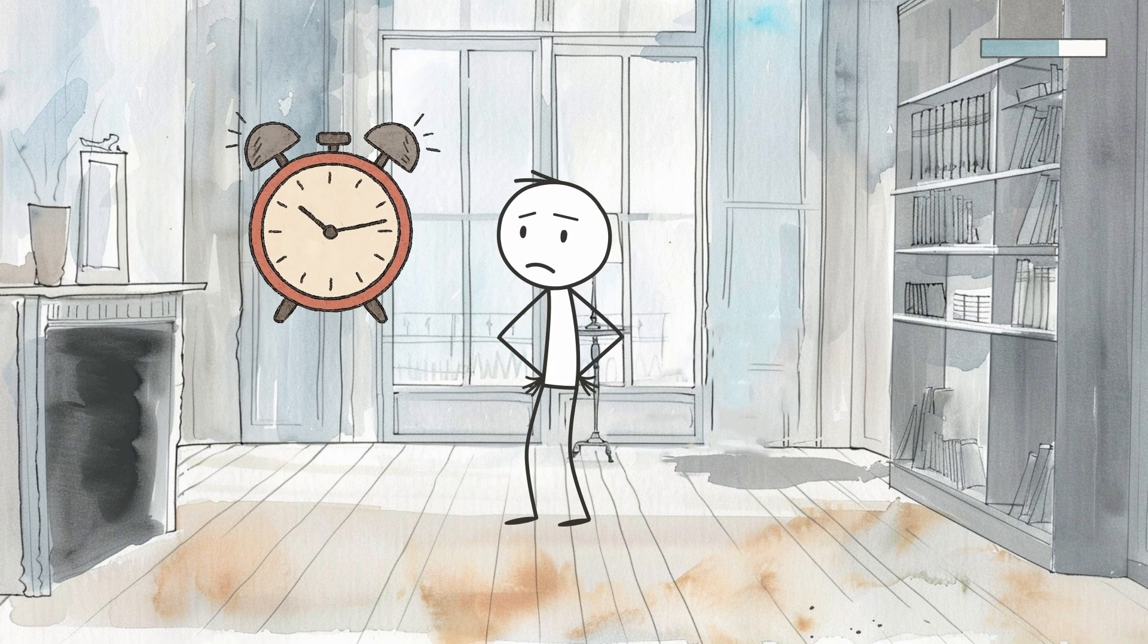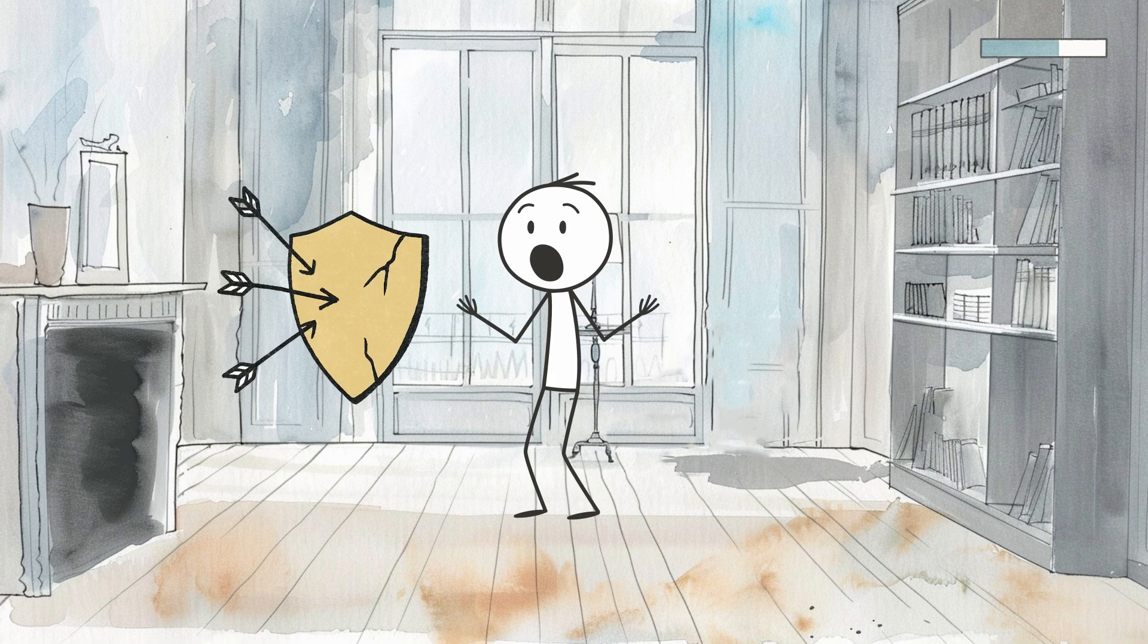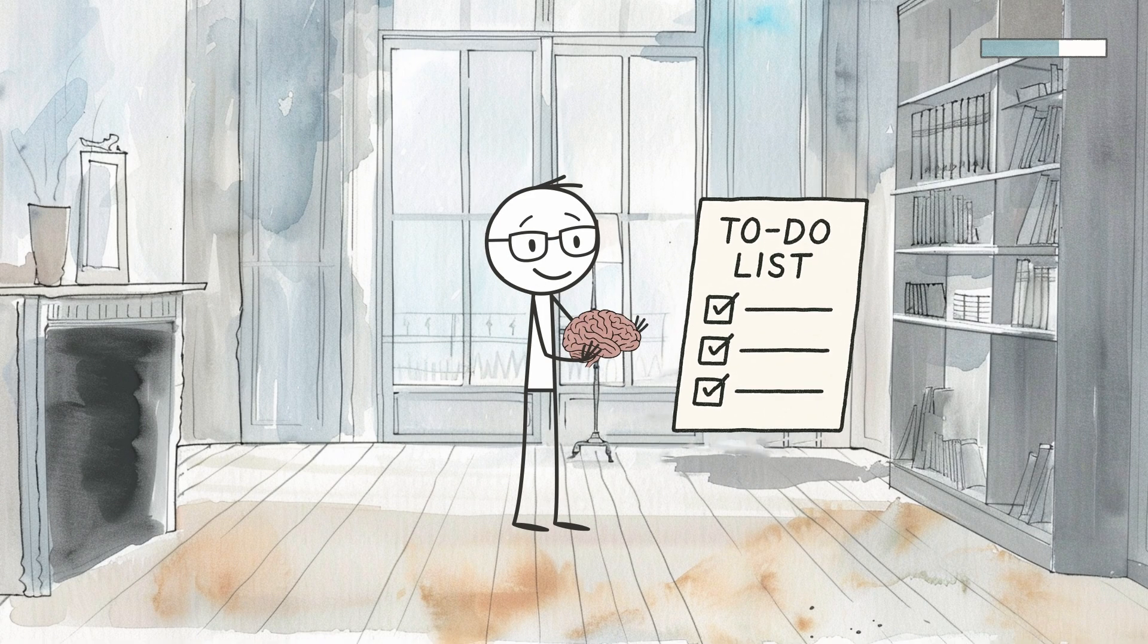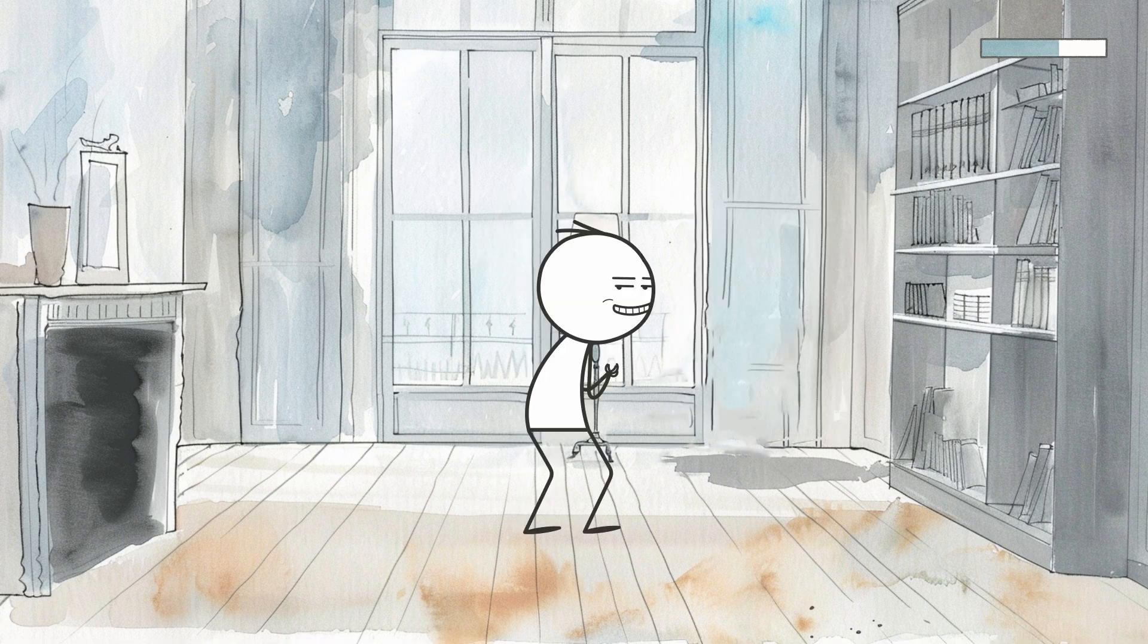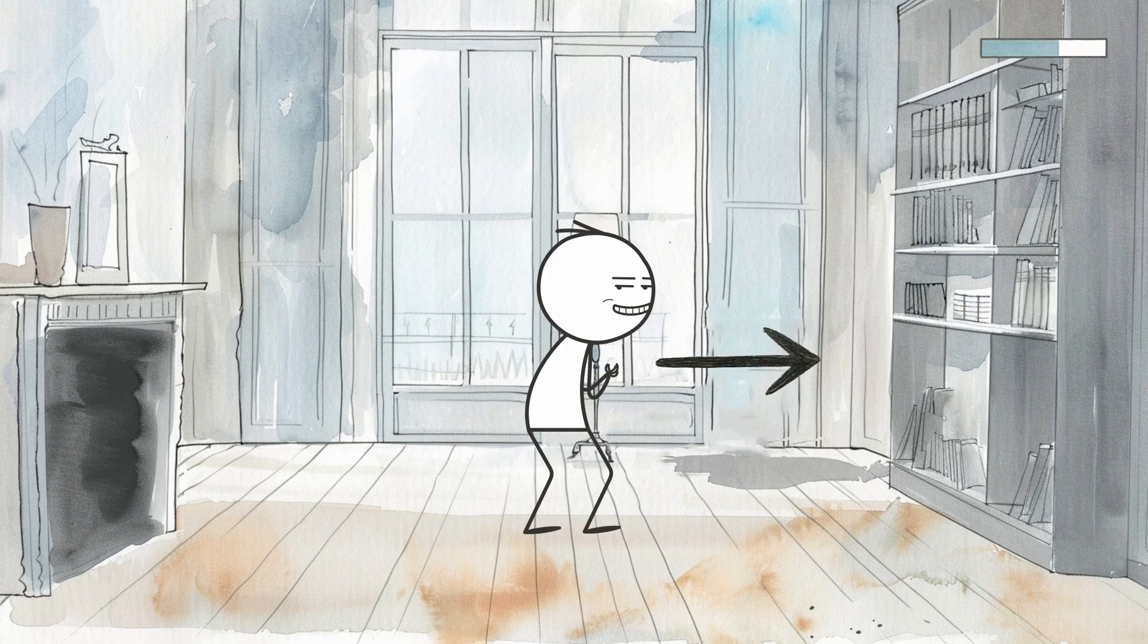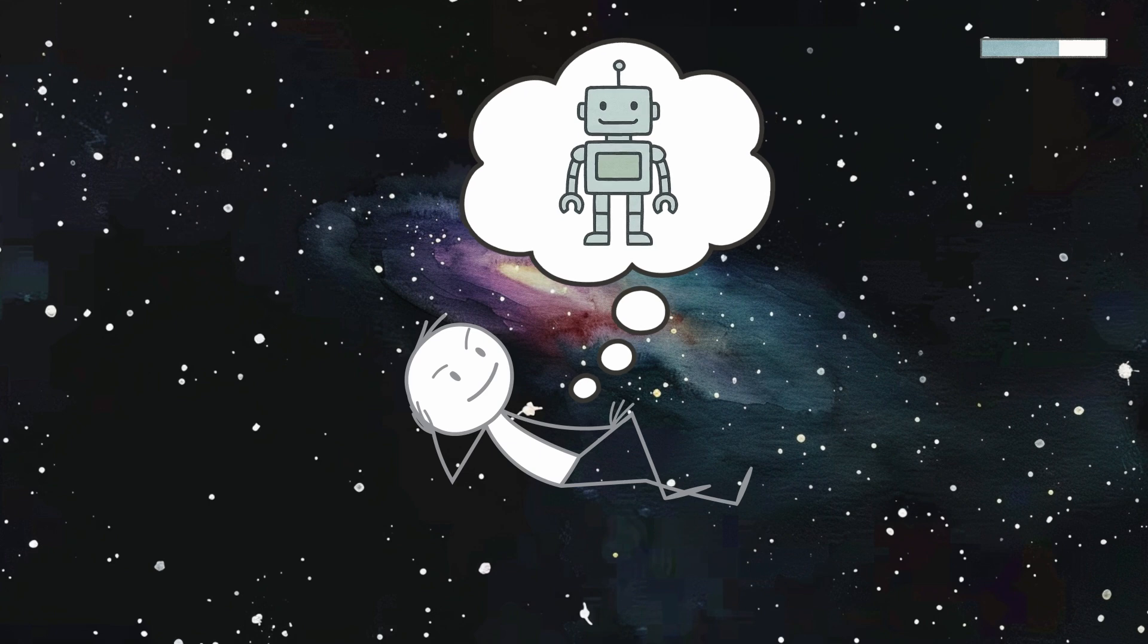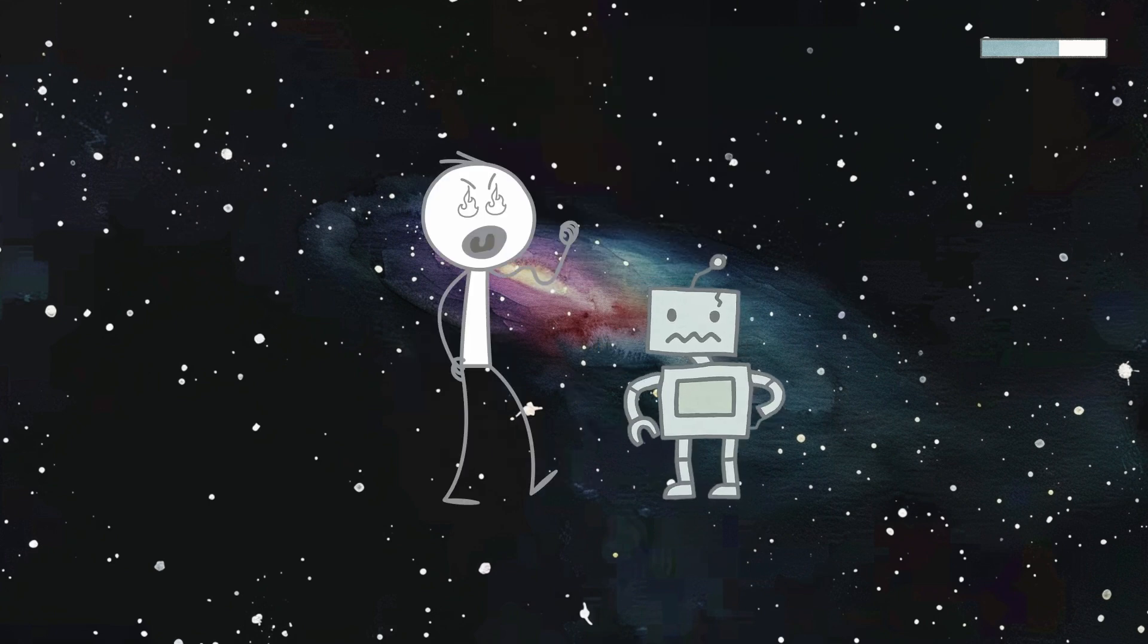Procrastination becomes a clever way to protect your self-worth from the harsh reality of imperfection. As long as the project exists only in your head, it can remain flawless. This is perfectionism wearing a procrastination disguise. It's easier to dream of brilliance than risk being average. The unfinished masterpiece in your imagination will always be better than the flawed reality you might actually create.